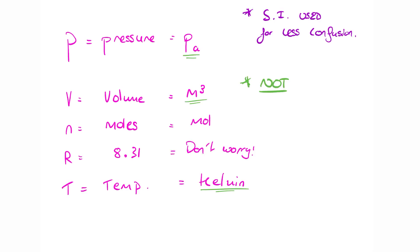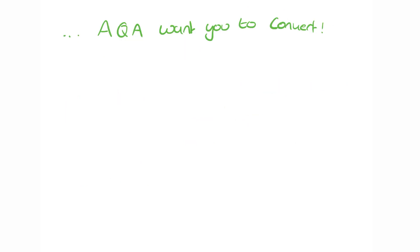You may well have noticed that a few of those units aren't the conventional ones. Volume in the ideal gas equation is not in centimeters cubed or decimeters cubed. Temperatures in Kelvin are not degrees Celsius. This becomes a problem because the equation only works if everything's in the correct units. So predictably, AQA love giving you stuff in the questions where the units aren't correct, and they expect you to convert.